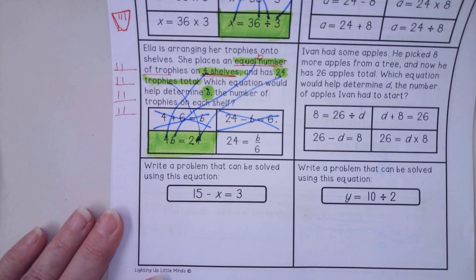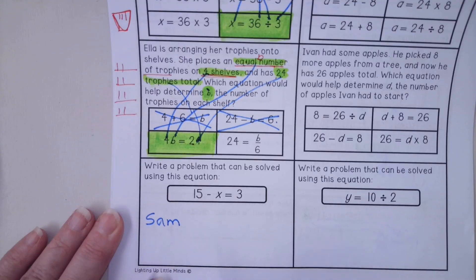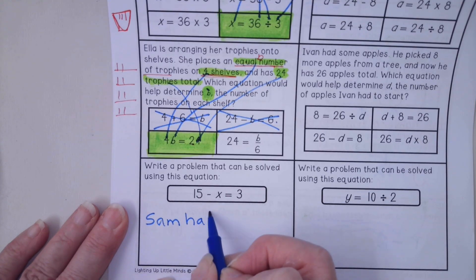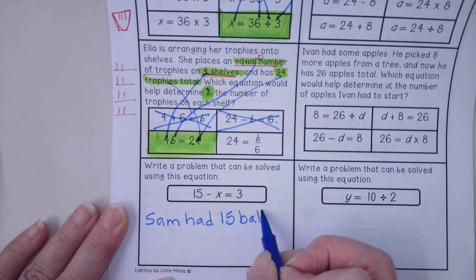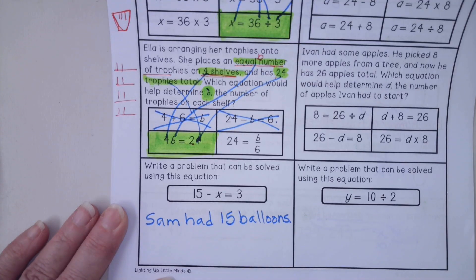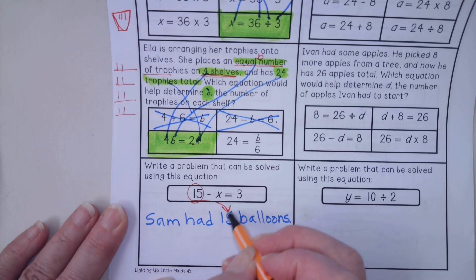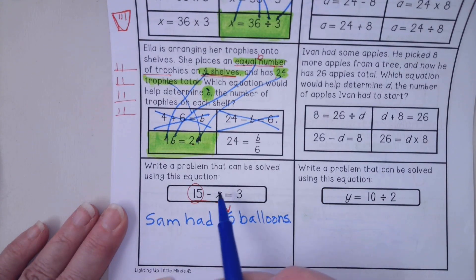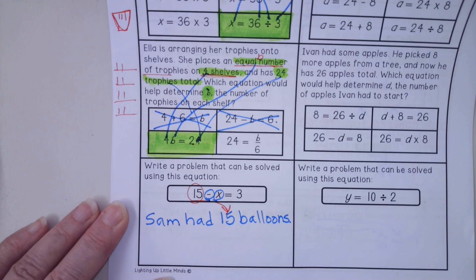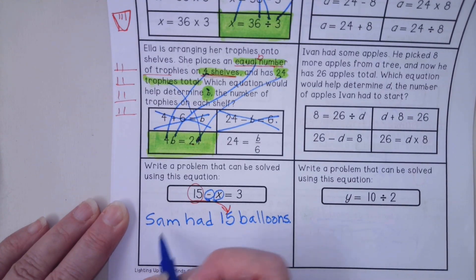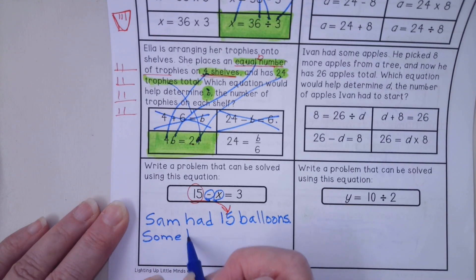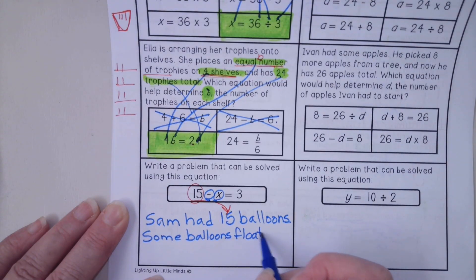So I have a person. I'm going to call that person Sam. Sam had 15 balloons. I've got my first variable listed. Now Sam is going to lose, pop. Maybe they're going to float away. And we don't know how many. We know that some of the balloons, or several of the balloons, float away or pop. So let's make them float away. Some balloons floated away.